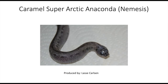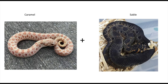Both of these have a very reduced head pattern. I searched the internet everywhere and this is the only picture I could find of a caramel with the arctic gene — I was not able to find a plain arctic caramel. I only found a super arctic caramel. This is a super arctic anaconda caramel, which has both of the incomplete dominant genes and is nicknamed the Nemesis — a very cool looking snake.